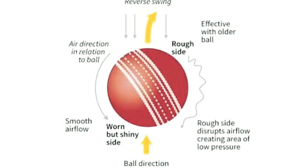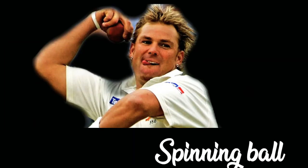The rough side of the ball disrupts the airflow and creates an area of low pressure. This pressure difference between the two sides of the ball leads to the ball swinging while traveling through the air, which gives an advantage to the bowlers.